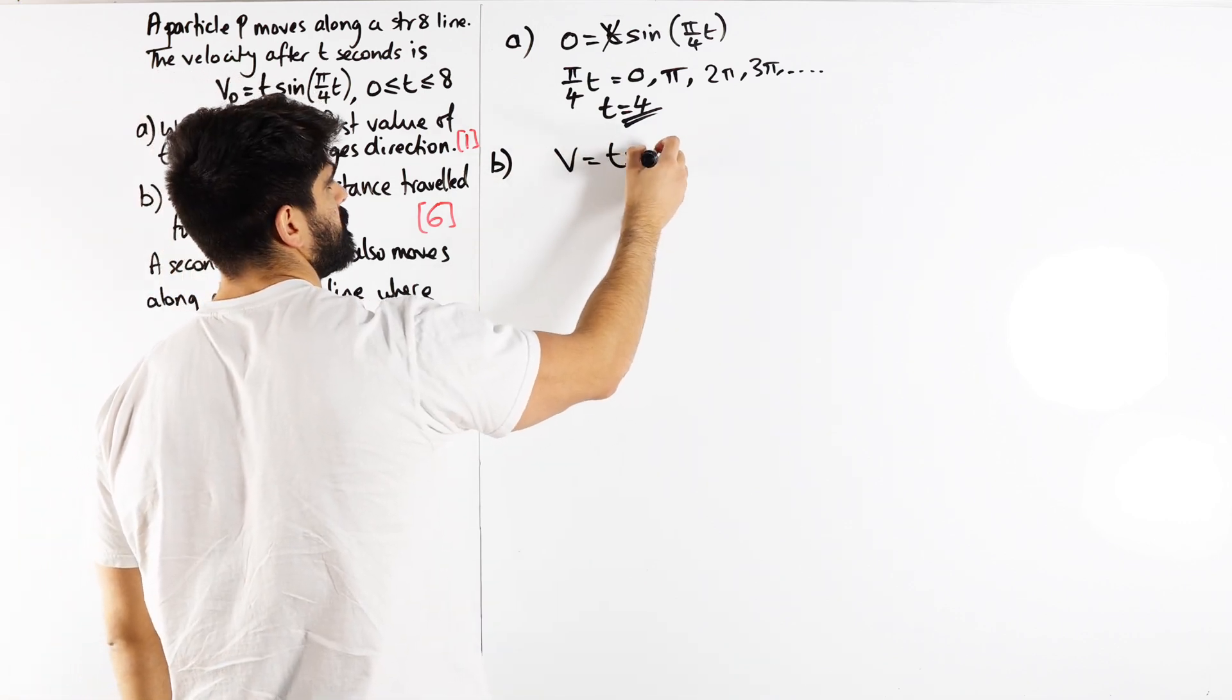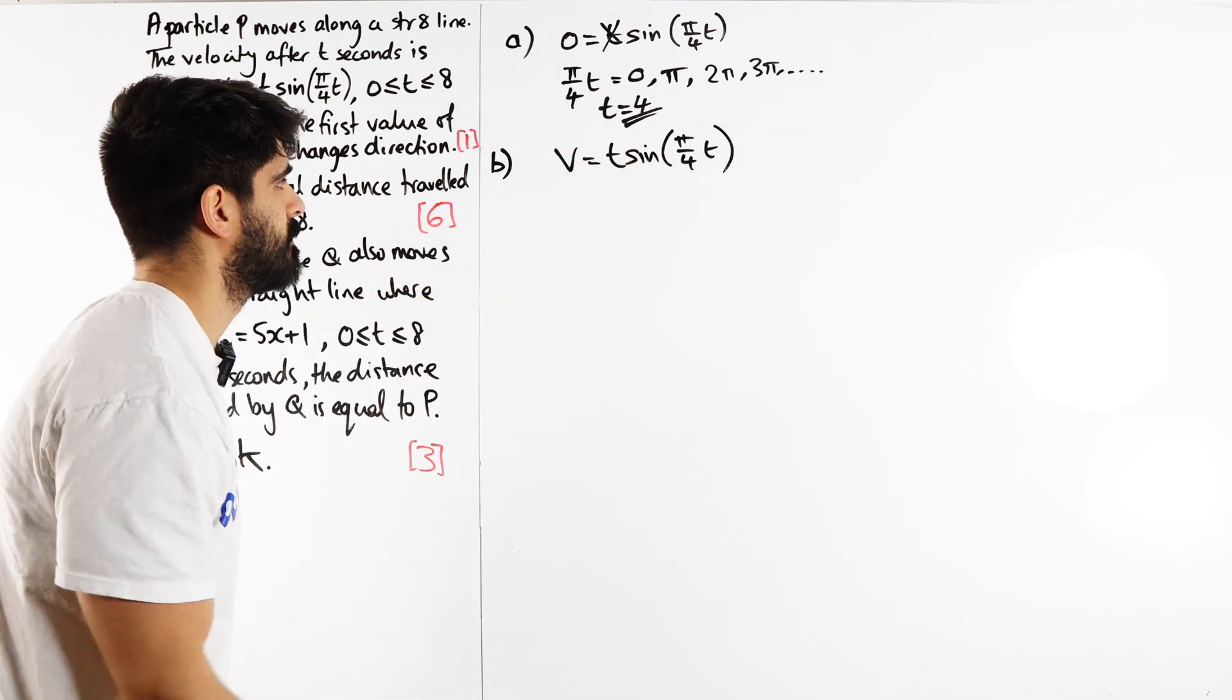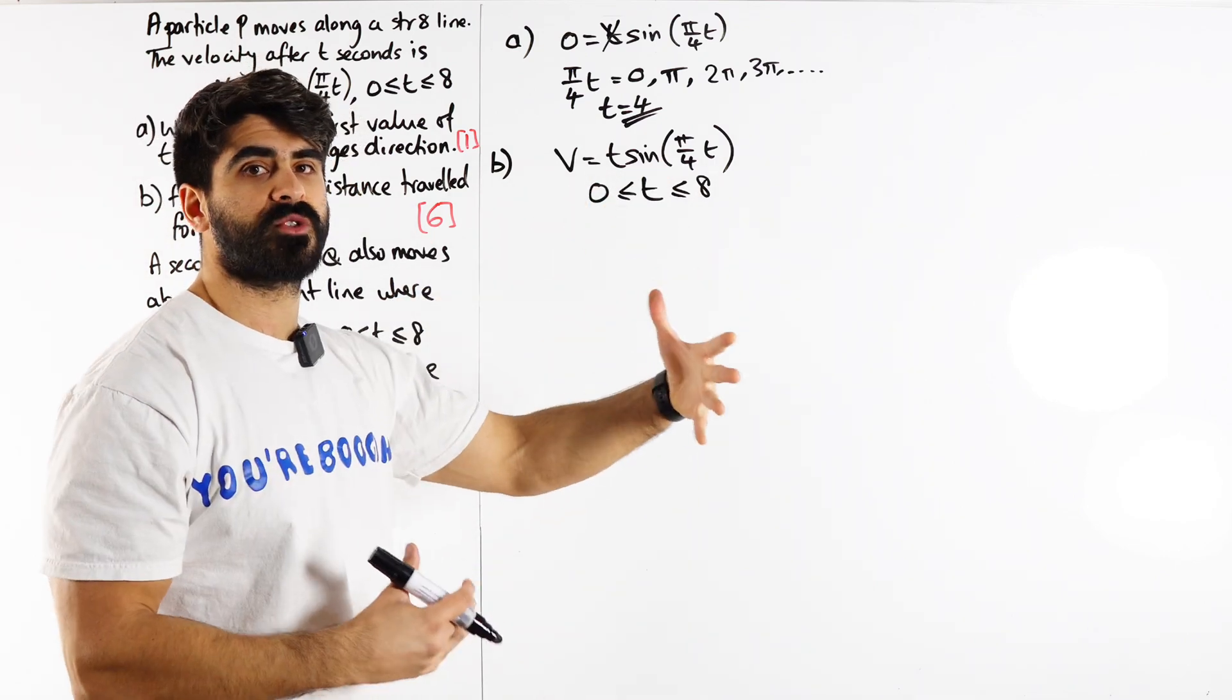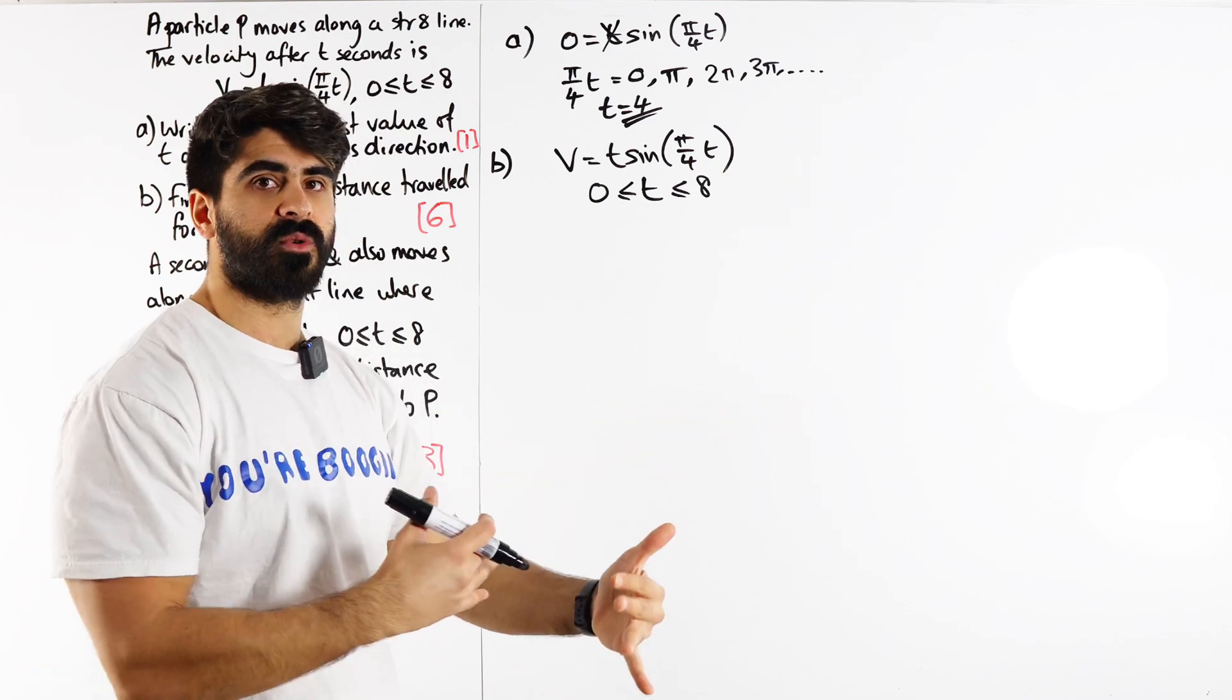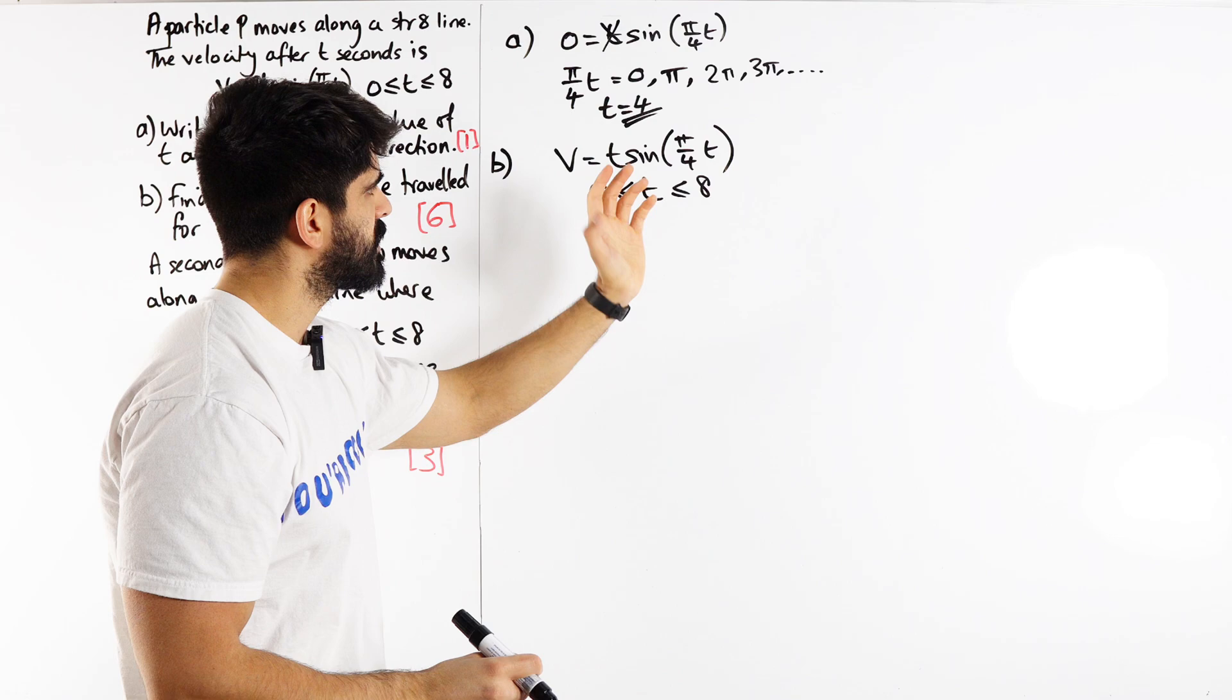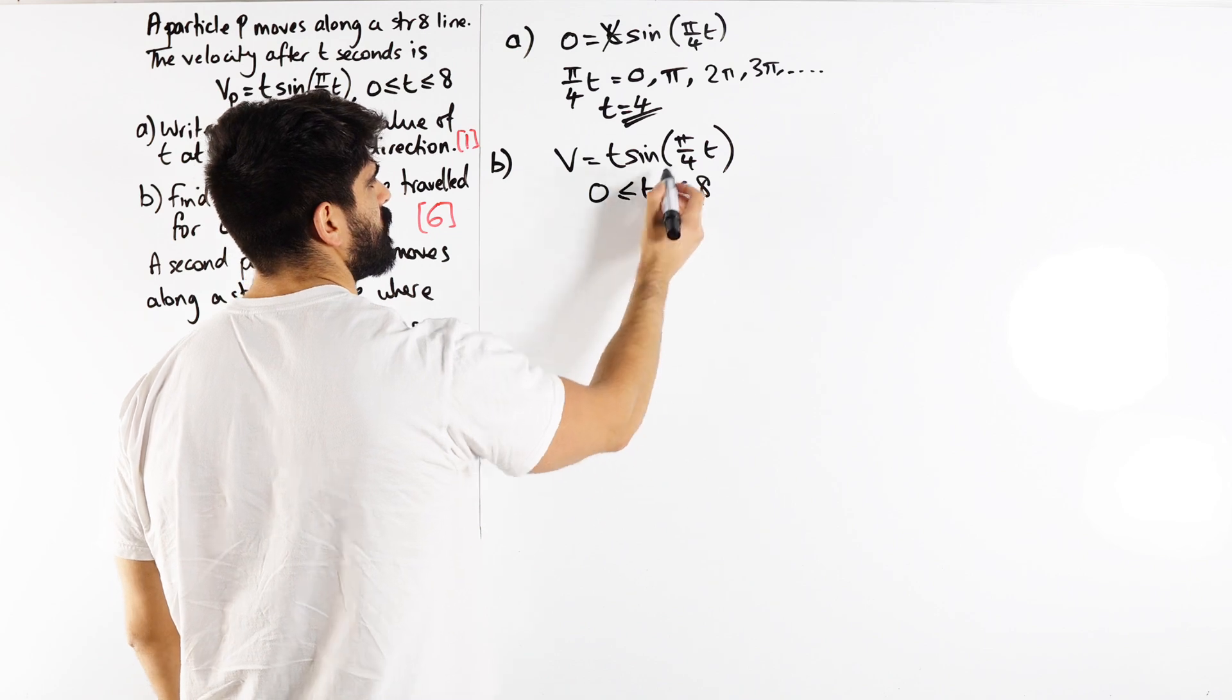At A levels, we'll always have a graph which we can easily sketch. Let me show you how we can sketch v = t sin(π/4 t). Forget about the t for a second, let's sketch sine of π/4 t. The first thing I'll tell you is to modify the range. Right now t is between 0 and 8. Because we know the coefficient divides all the x values by that coefficient. We're dividing all the x values by π/4. We need to make all of these look like π/4, so we're going to times through by π/4.